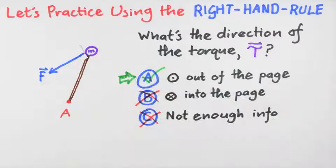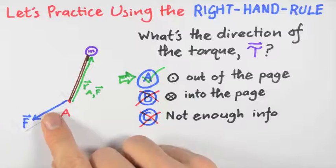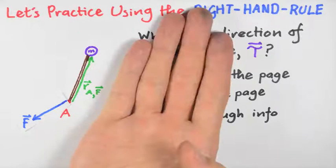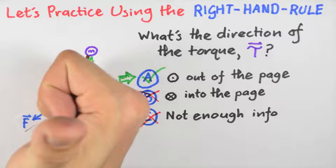Here's the solution. We see that by sticking the straight fingers of our right hand in the direction of R sub AF, by rotating our wrist to face the palm toward F, and by curling our fingers and sticking our thumb straight out, we see that the direction of the torque is toward us.